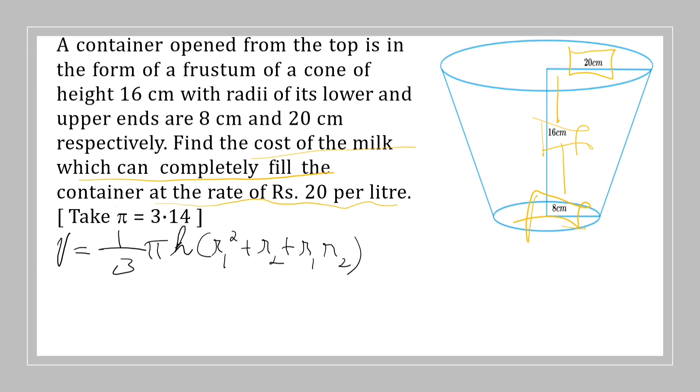What are the given things? We are provided with all the required things. Height of the frustum of cone is 16 centimeter, radius r1 equals 8 centimeter, and radius r2 is 20 centimeter.